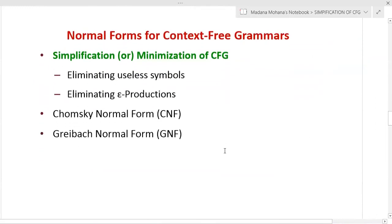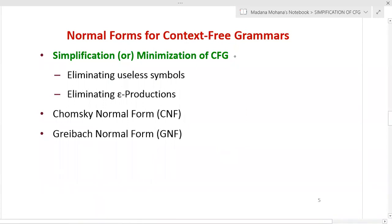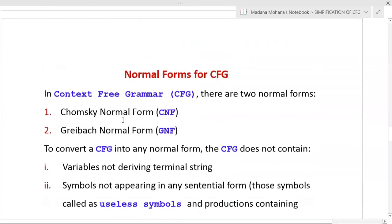Now let us come to the agenda of today's topic. We will discuss simplification or minimization of context-free grammars using two methods: eliminating useless symbols and eliminating epsilon productions. After simplification, we can convert a context-free grammar into Chomsky Normal Form and Greibach Normal Form.